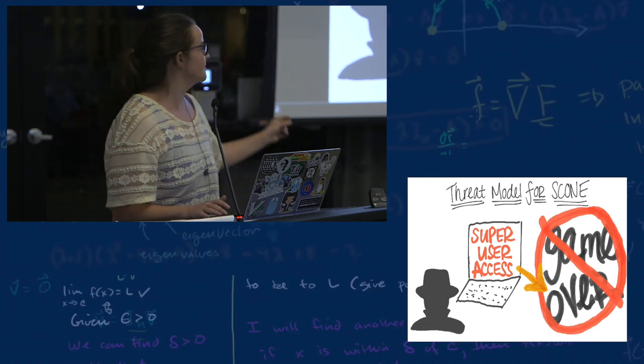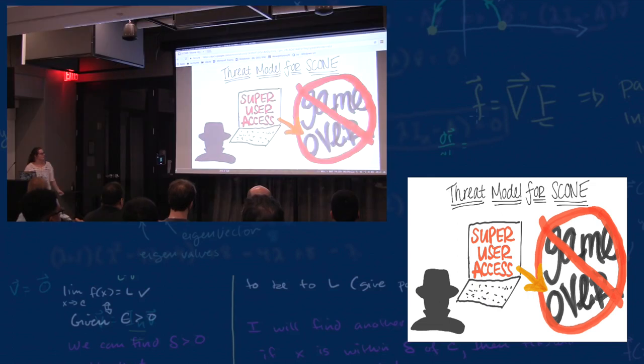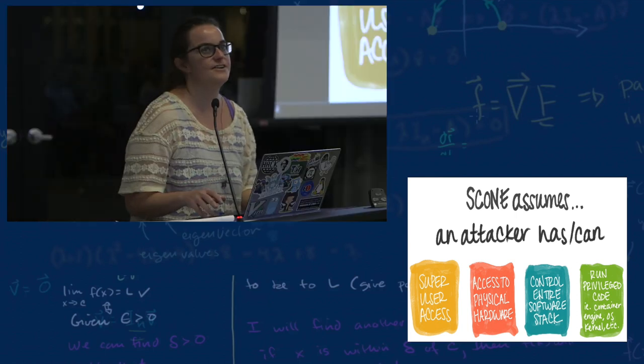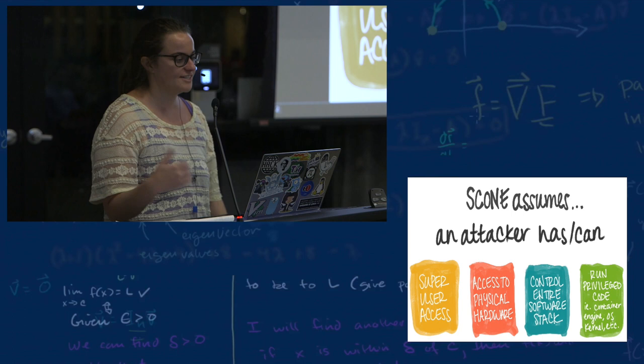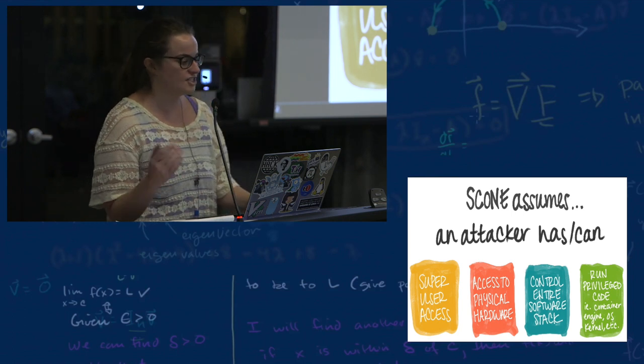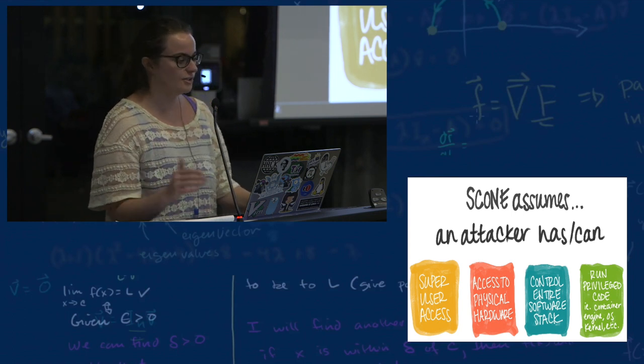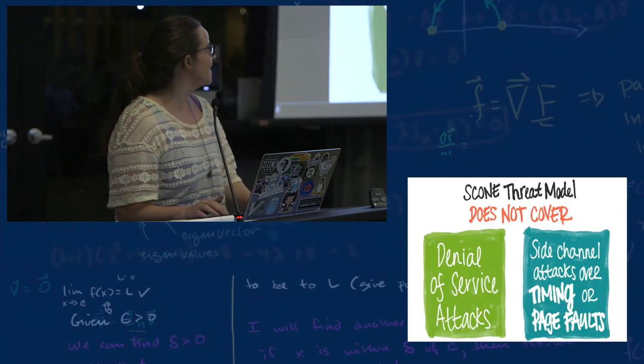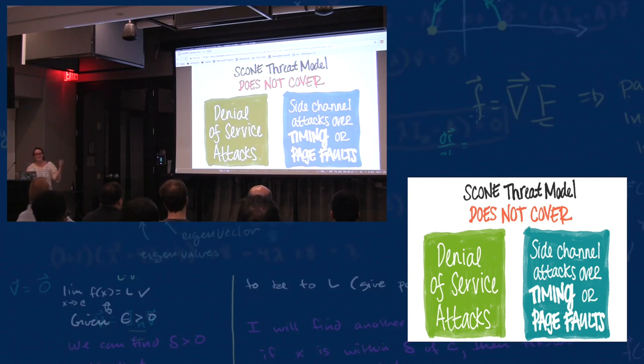The threat model for Scone assumes that an attacker has super user access, access to the physical hard drive, and can control the entire software stack, from the container engine to the kernel. But it does not cover side channels or denial of service.